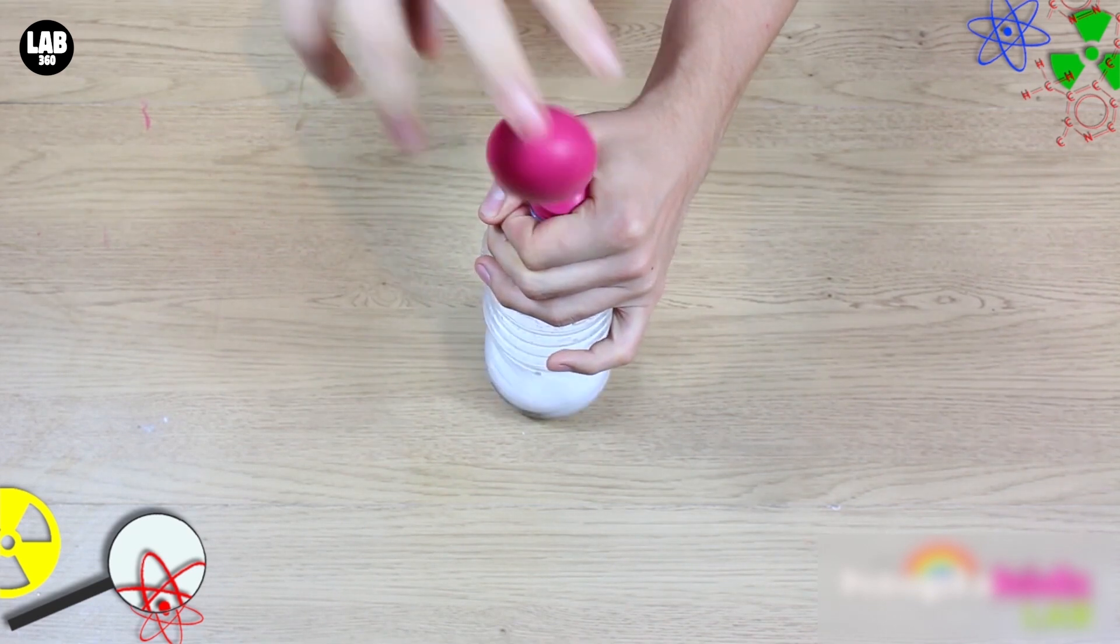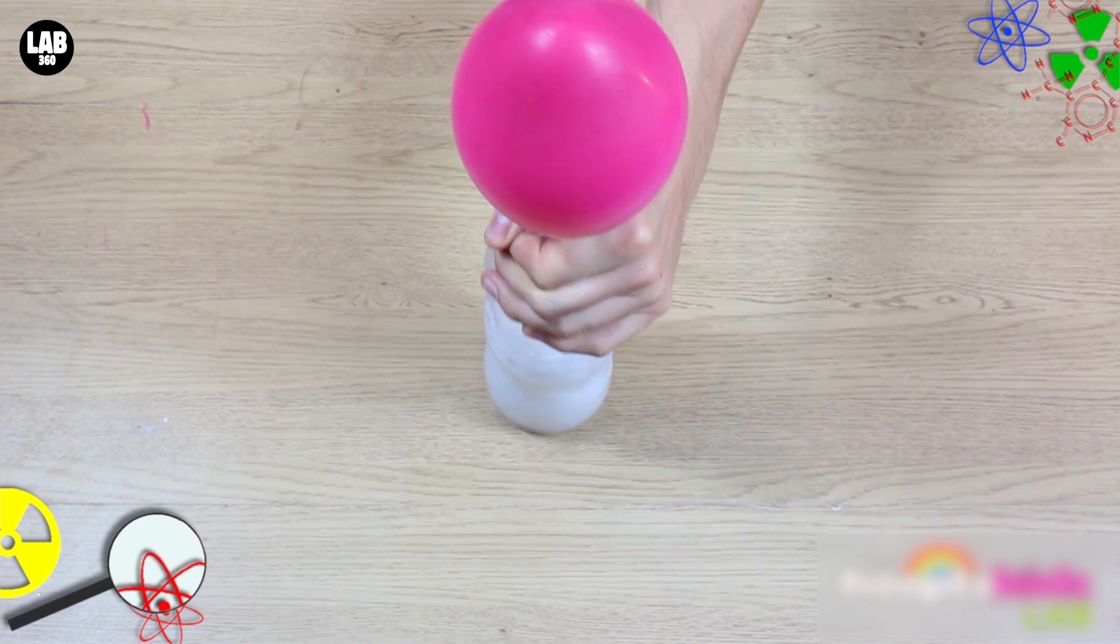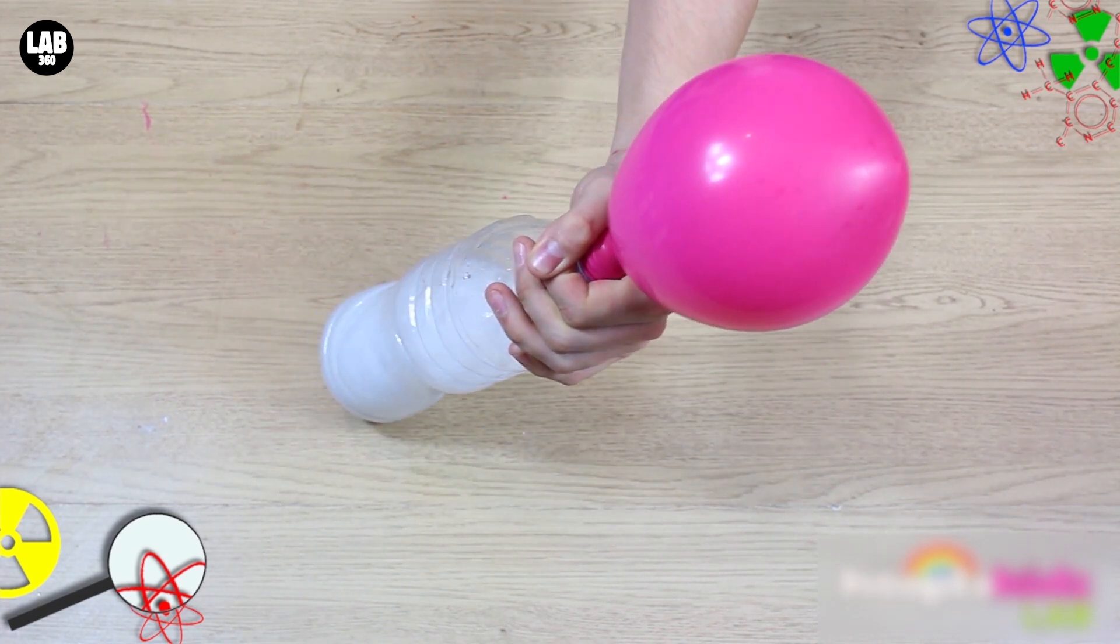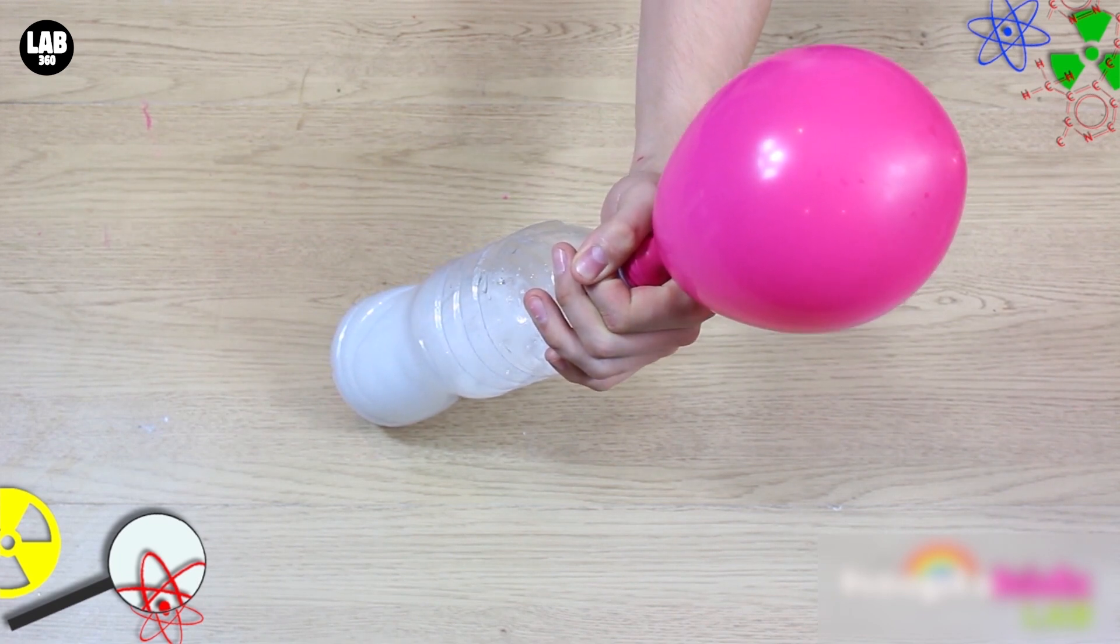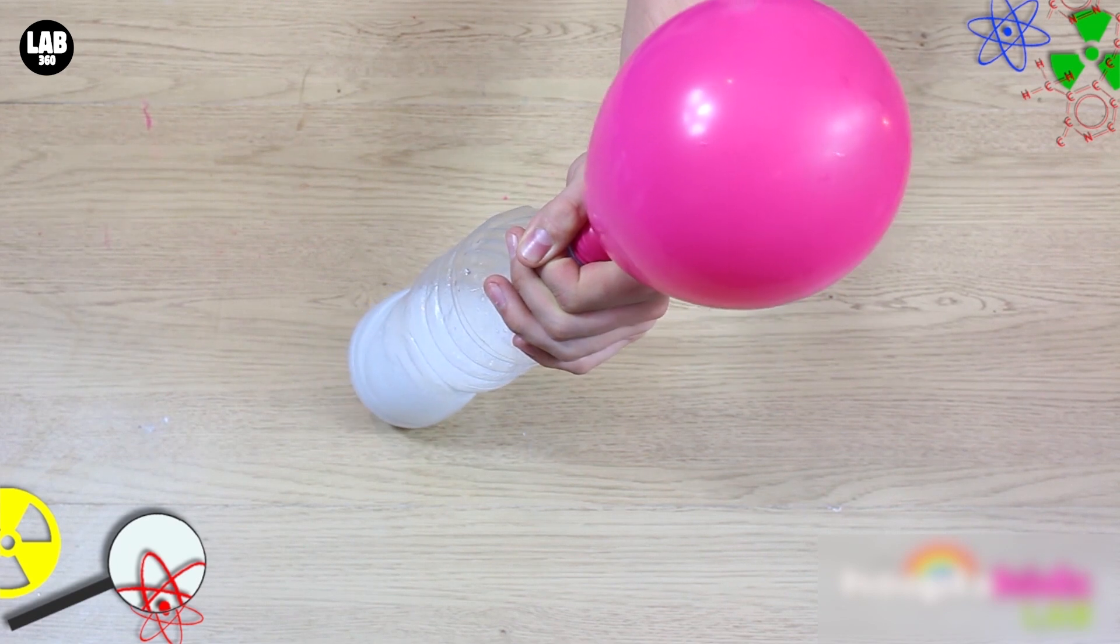Then, take the other end of the balloon, and tip it upside down. This will pour the baking soda into the bottle, and you'll see the balloon start to fill up instantly. This is because the baking soda is mixing with the vinegar, and creating a gas called carbon dioxide, which fills up the balloon.